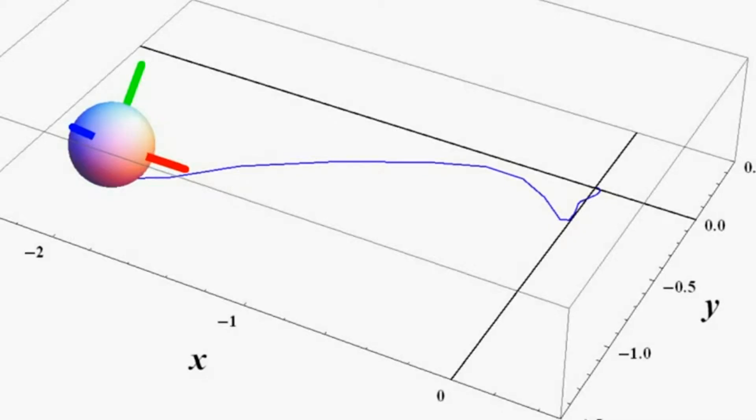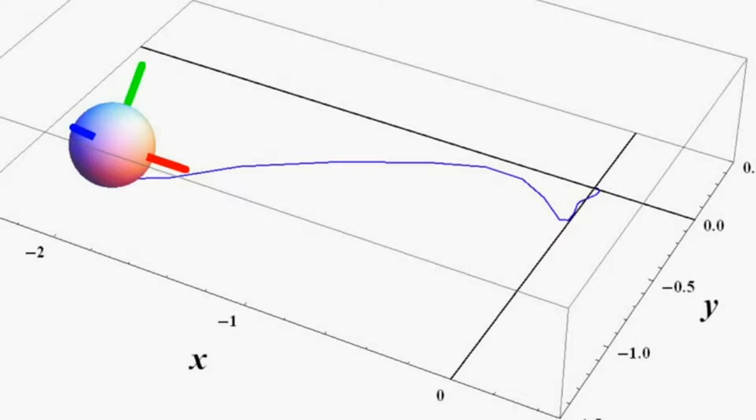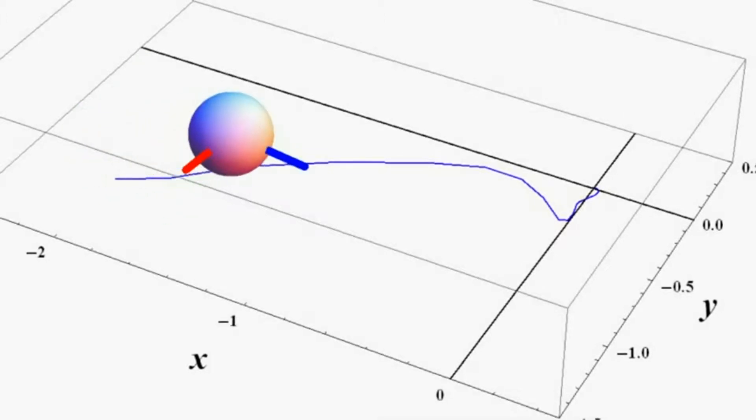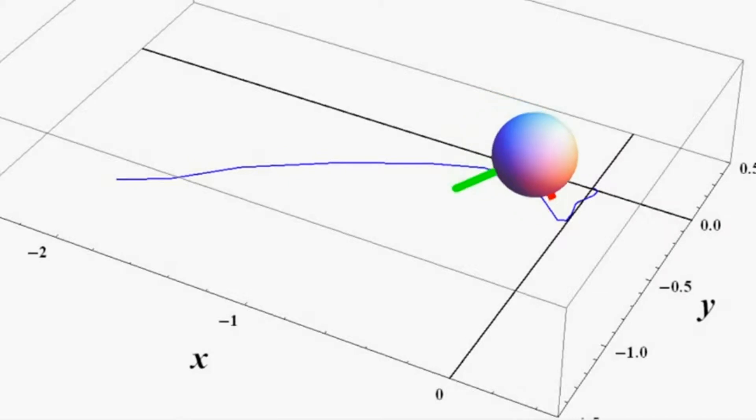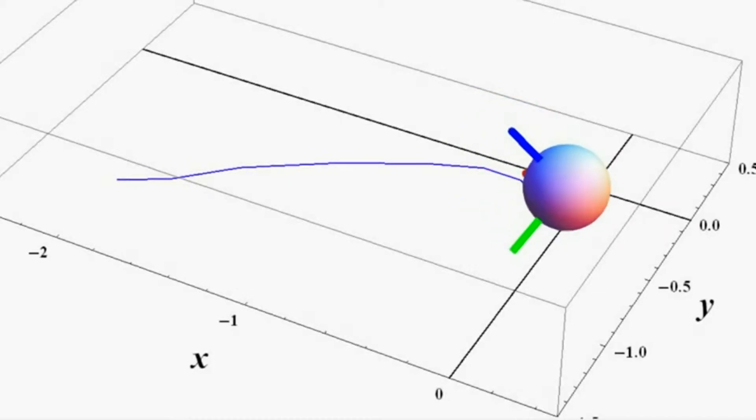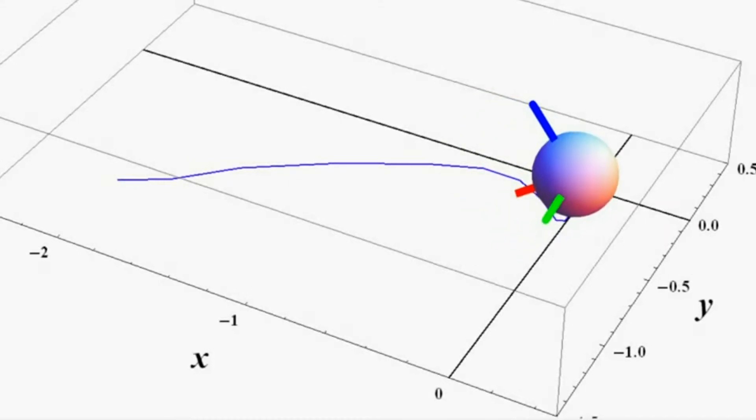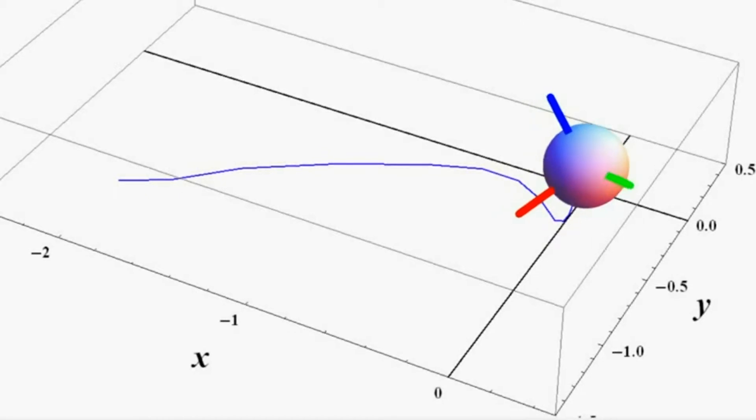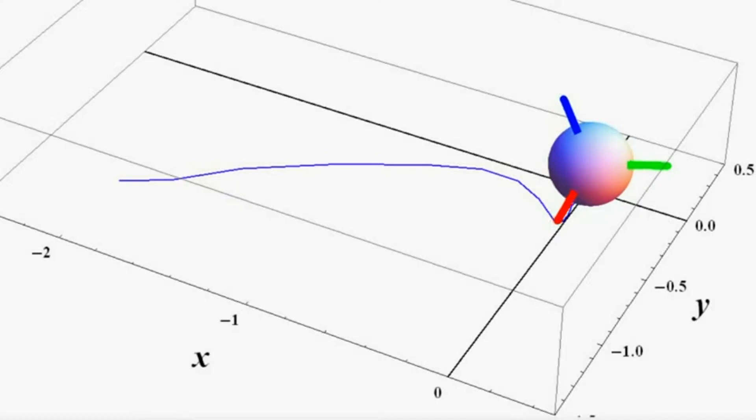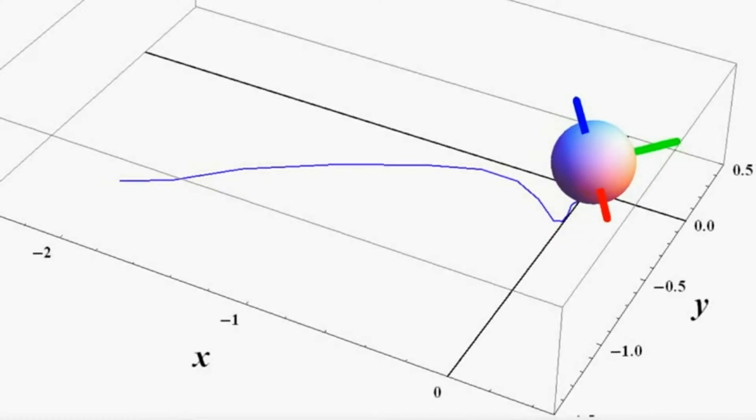The position and reduced attitude stabilization controller regulates the position to a desired value and simultaneously points an axis of the body upwards. An application would be communication with a satellite from a desired location.